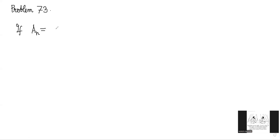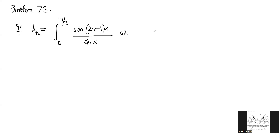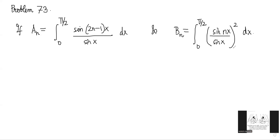The question defines aₙ as the integral from 0 to π/2 of sin(2n−1)x divided by sin x dx, and bₙ as the integral from 0 to π/2 of sin(nx) divided by sin x, whole squared, dx. We have to answer the following questions and select which options are correct.